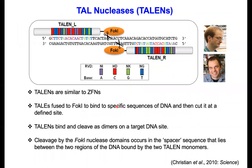The second generation gene-editing nuclease is called TALENs — transcription activator-like effector nucleases — which is similar to zinc finger nucleases, but the DNA-binding protein is different. Here, instead of zinc finger, it is a TALE DNA-binding protein. Each zinc finger recognizes three base pairs, but each TALE unit recognizes only one base pair. This was discovered by John Boch, a German plant pathologist, who identified the TALE DNA-binding protein. Dr. Dan Voytas from the University of Minnesota then fused FokI nuclease with the TALE DNA-binding protein to create TALENs, and showed it can make a double-strand break in plant systems.